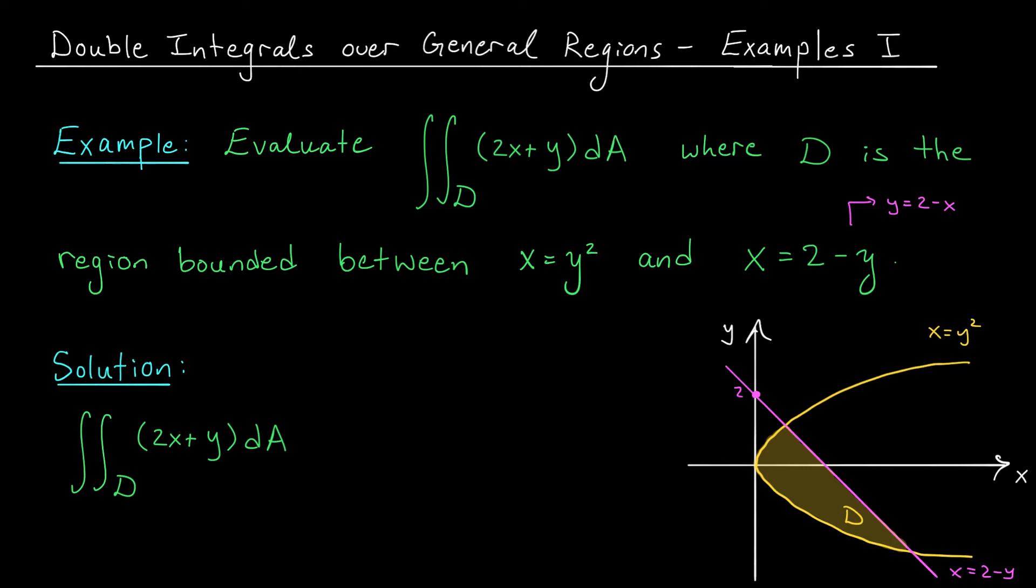On the other hand, it is bounded nicely on both the left and right by functions of y. If I draw an arrow pointing to the right, you can see that the parabola is going to be my leftmost bound and my line is going to be my rightmost bound. All the while, y is moving between these two constant bounds, the points where the line and parabola intersect.